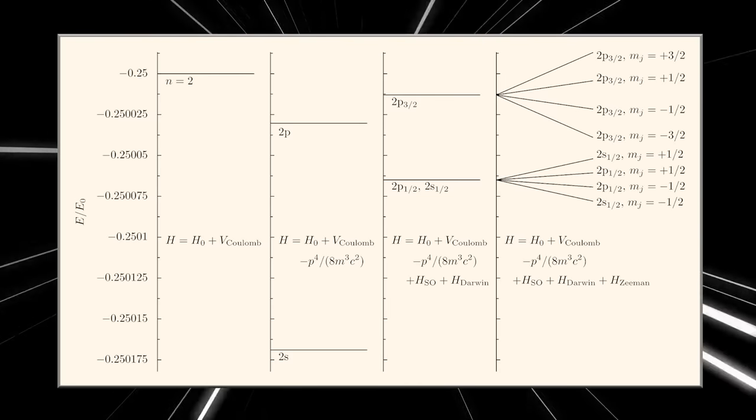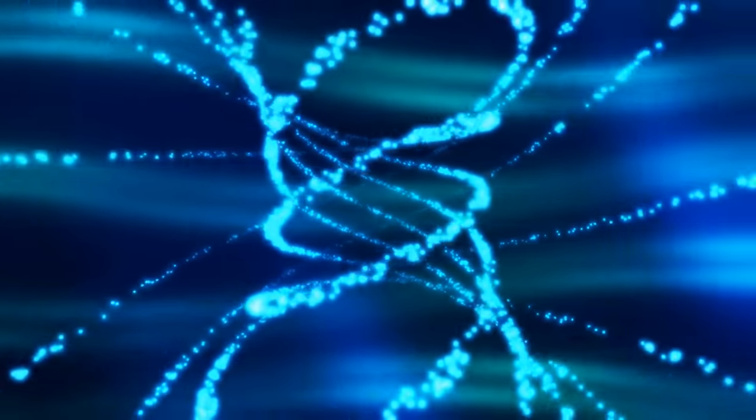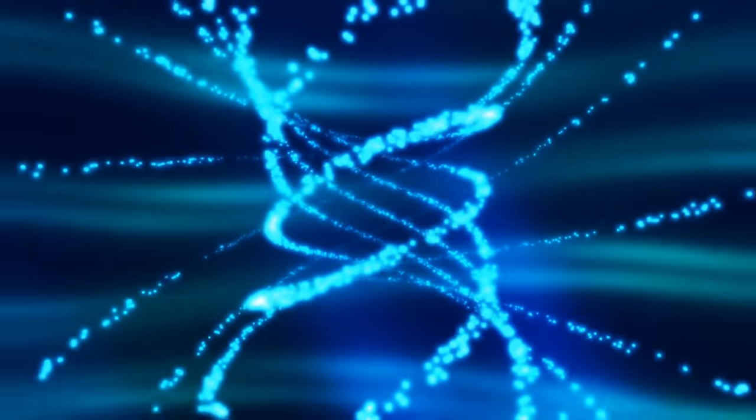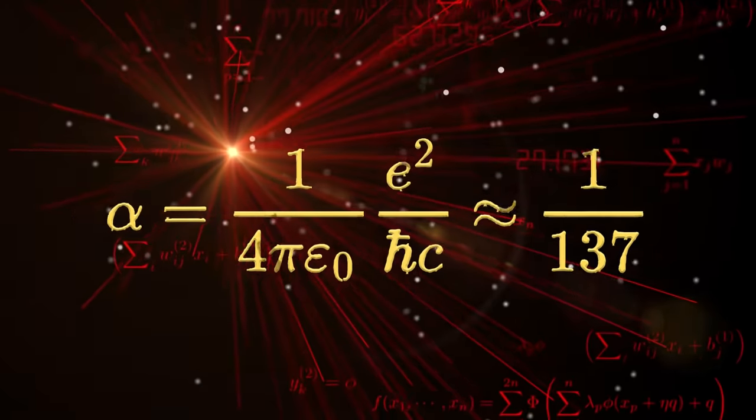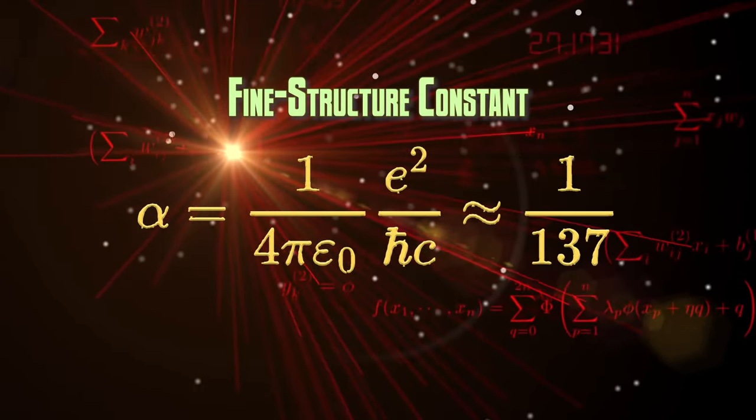We realized that to account for and explain this fine structure, we needed more sophisticated versions of quantum mechanics. Over the course of a few years, we introduced a better understanding of quantum mechanics and the concept of spin, which is critical to understanding this kind of splitting. And in the equations, as we started to understand the relationship between charged particles and electromagnetic radiation, a constant appeared — called the fine structure constant, because it was originally applied to understanding the fine structure of emission and absorption spectra.